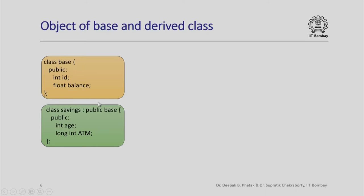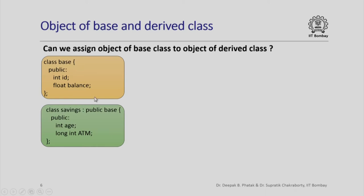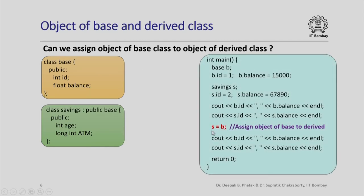Here is the same base and derived class again. We just saw that it is okay to assign an object of the derived class to an object of the base class. Now we want to ask: can we do it the other way around? Here I am trying to assign an object of the base class to the derived class. Think about it logically — an object of the base class cannot be thought of as an object of a derived class. The base class has its own existence. However, an object of the derived class can be thought of as an object of the base class. So this assignment should be a problem.